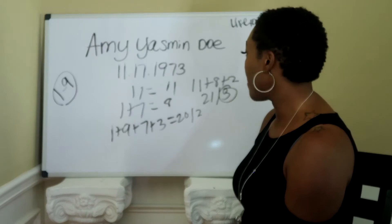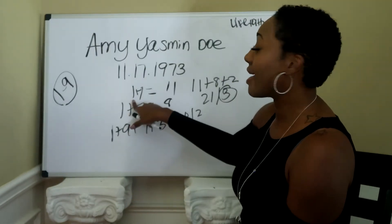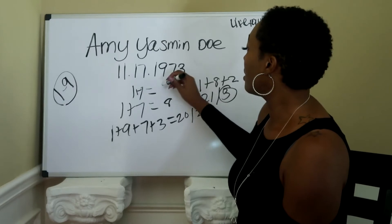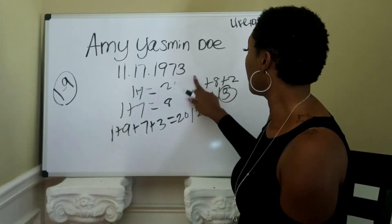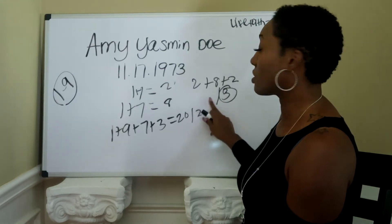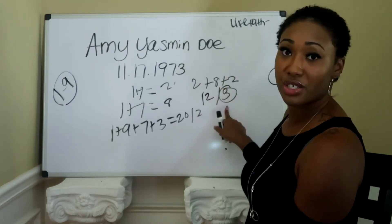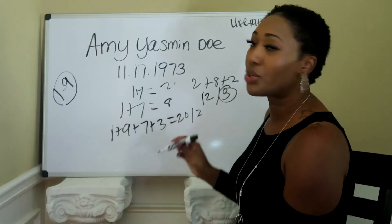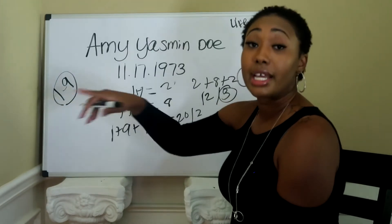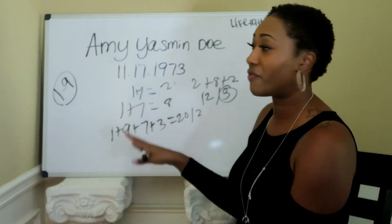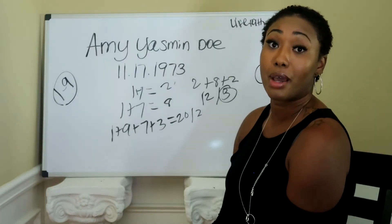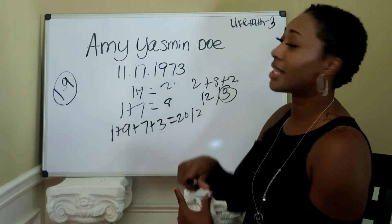So we do 11 plus eight plus two, which equals 21, reducing to three. Ms. Doe is a life path number three. Now, if instead you add one plus one to get two, then two plus eight plus two equals 12, and she's still a three. No matter how you add up the numbers in your date of birth, it's still going to equal that same whole number. Whether you go by Pythagorean or by adding all the digits, it's still going to be the same life path number. So we'll put her as a life path number three.